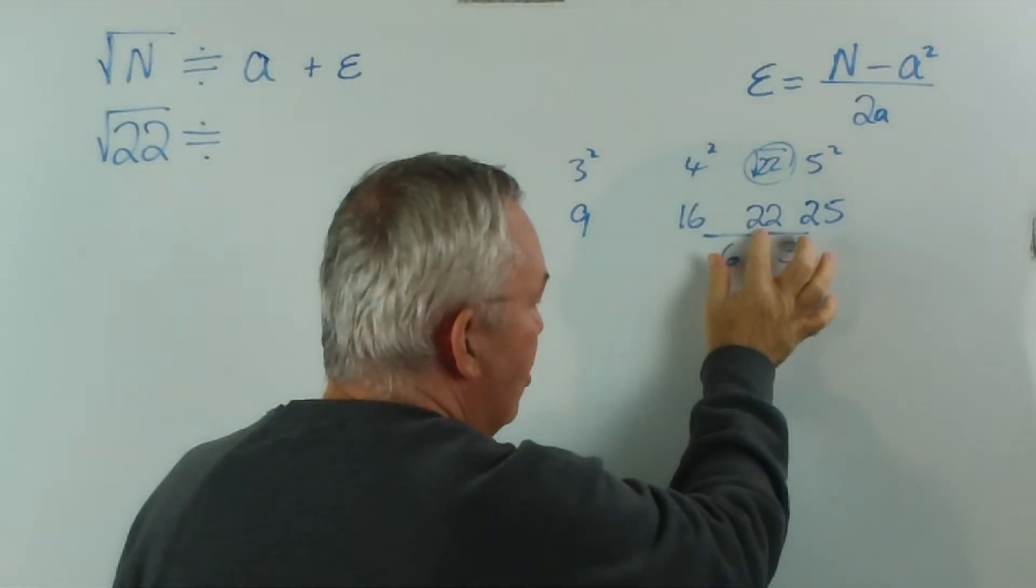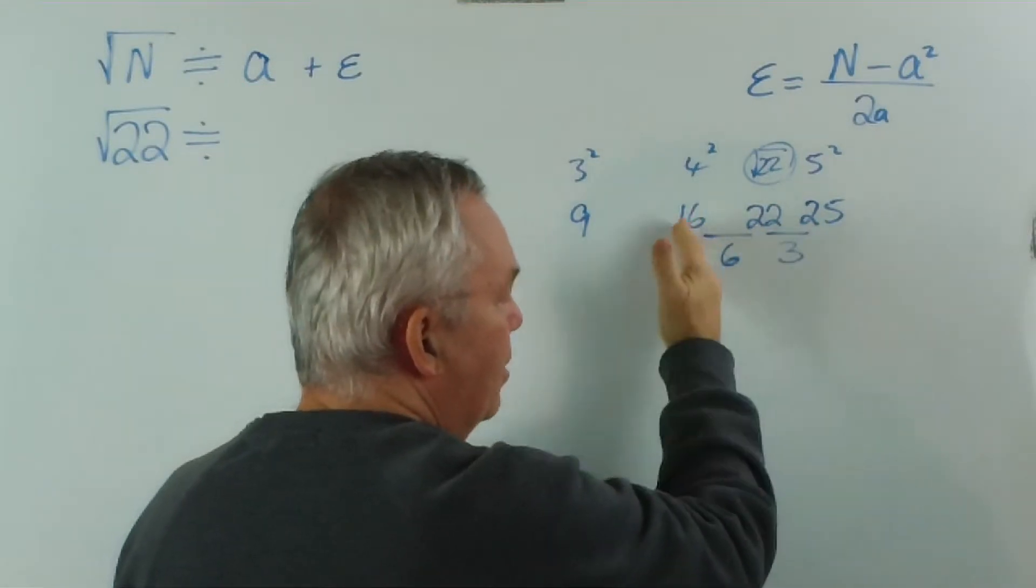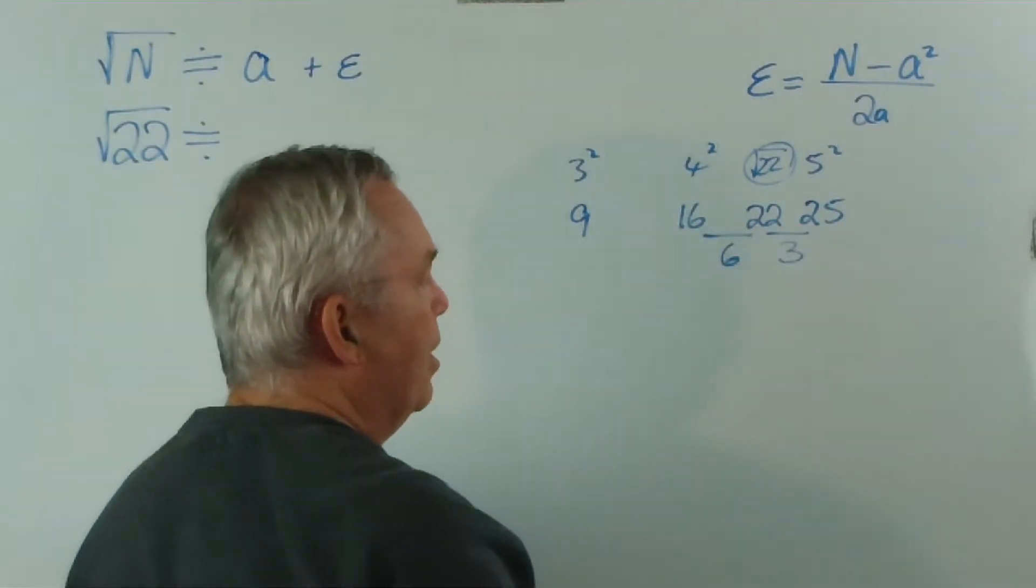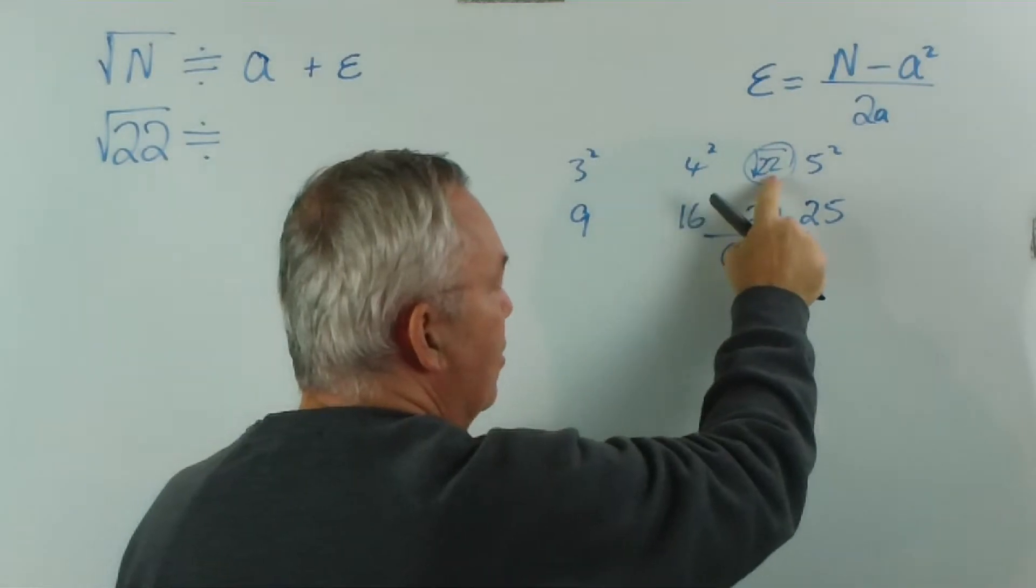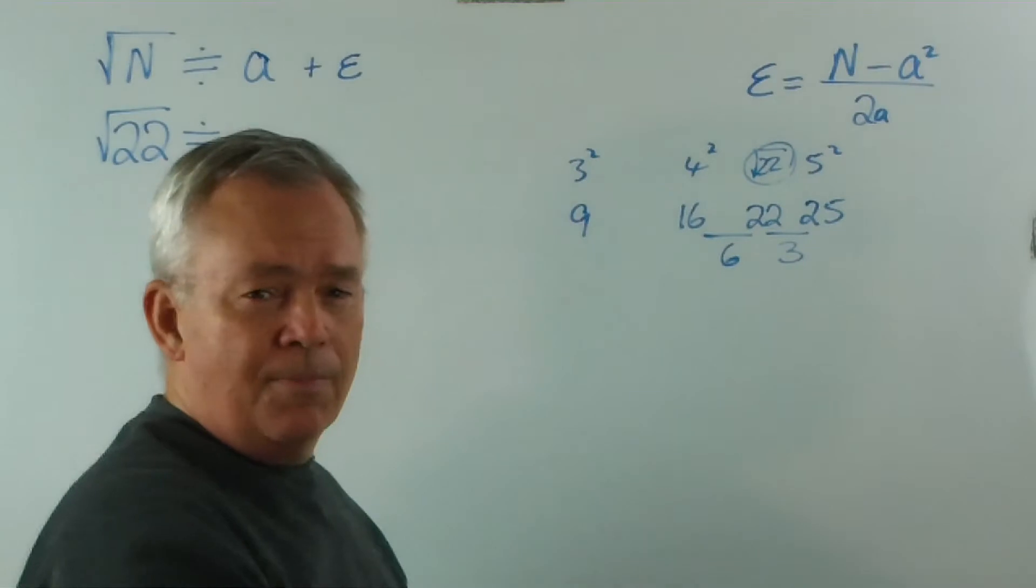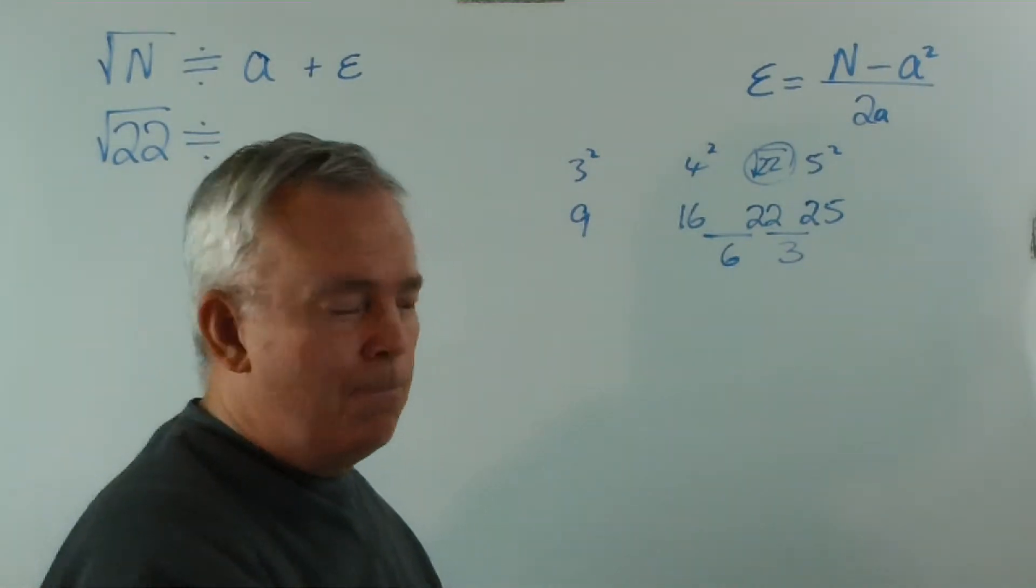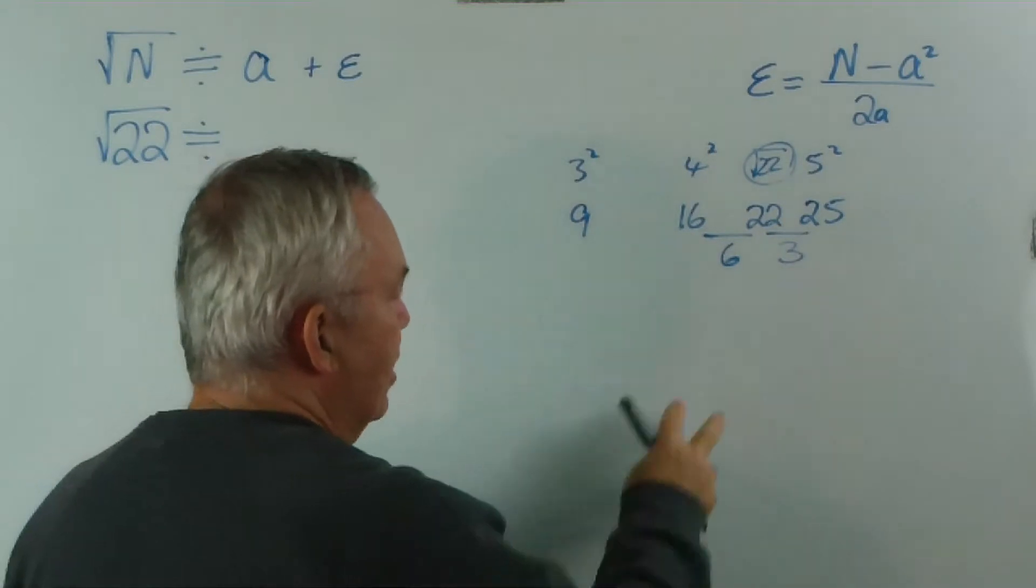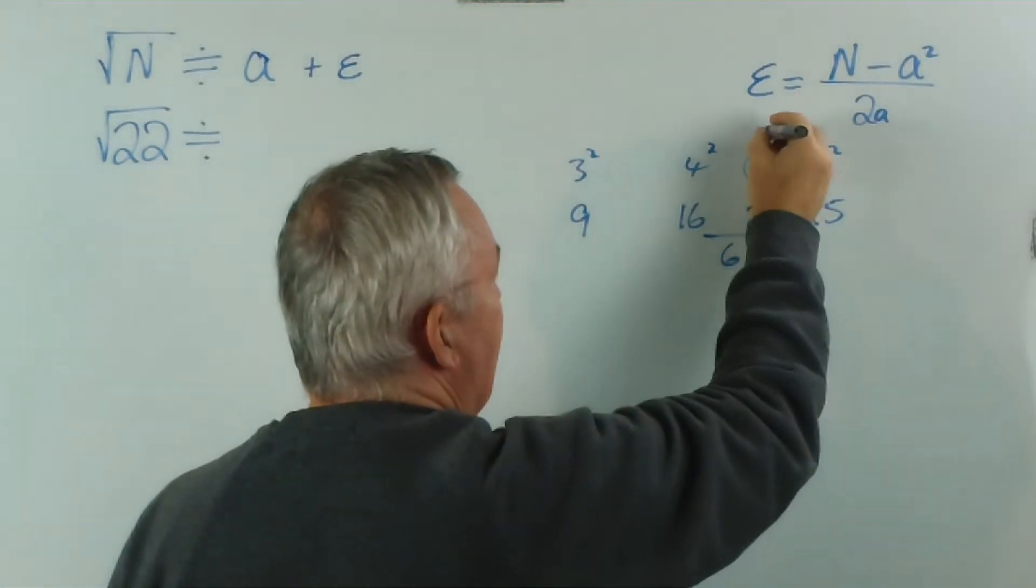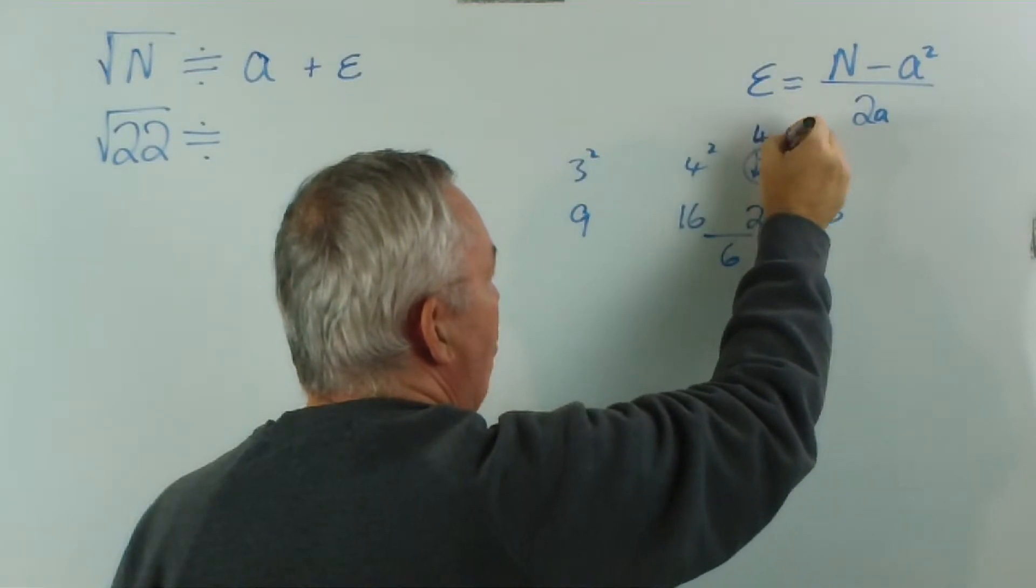So 22 is 6 out of 9, or 2 thirds of the way along from 16 to 25. So we're assuming that the square root of 22 is about 2 thirds of the way along from 4 to 5. Now 2 thirds is 0.67, or 0.6 repeater. And since this is very rough, I'm going to make an assessment that this is about 4.6.